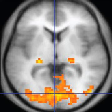The contrast between different tissues is determined by the rate at which excited atoms return to the equilibrium state. Exogenous contrast agents may be given to the person to make the image clearer. The major components of an MRI scanner are the main magnet, which polarizes the sample, the shim coils for correcting shifts in the homogeneity of the main magnetic field, the gradient system which is used to localize the MR signal, and the RF system, which excites the sample and detects the resulting NMR signal. The whole system is controlled by one or more computers.